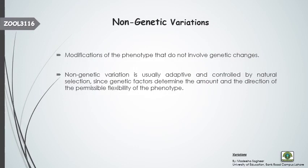The first type of intra-population variation is non-genetic variation. Non-genetic variations do not involve the genetic makeup and do not alter the genes or DNA. They are actually the result of adaptation to environmental factors. When an individual tries to adapt to the environment, these non-genetic variations take place. Genetic factors determine the amount and direction of these phenotypic variations.